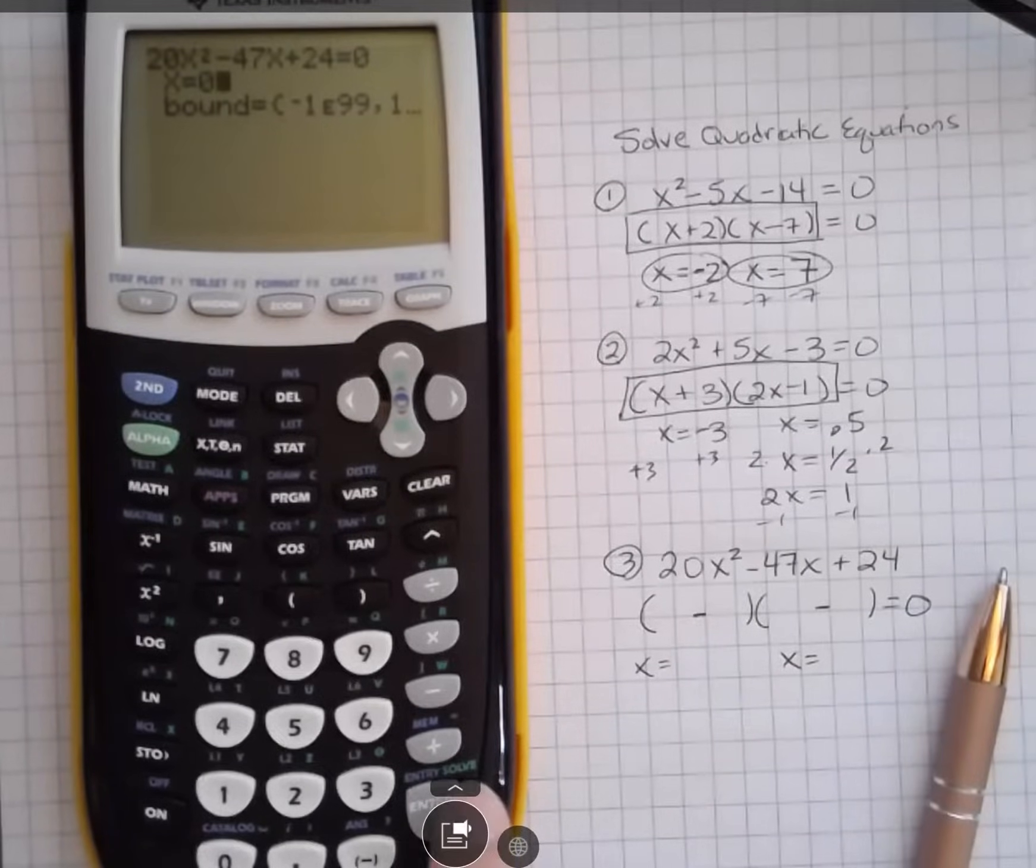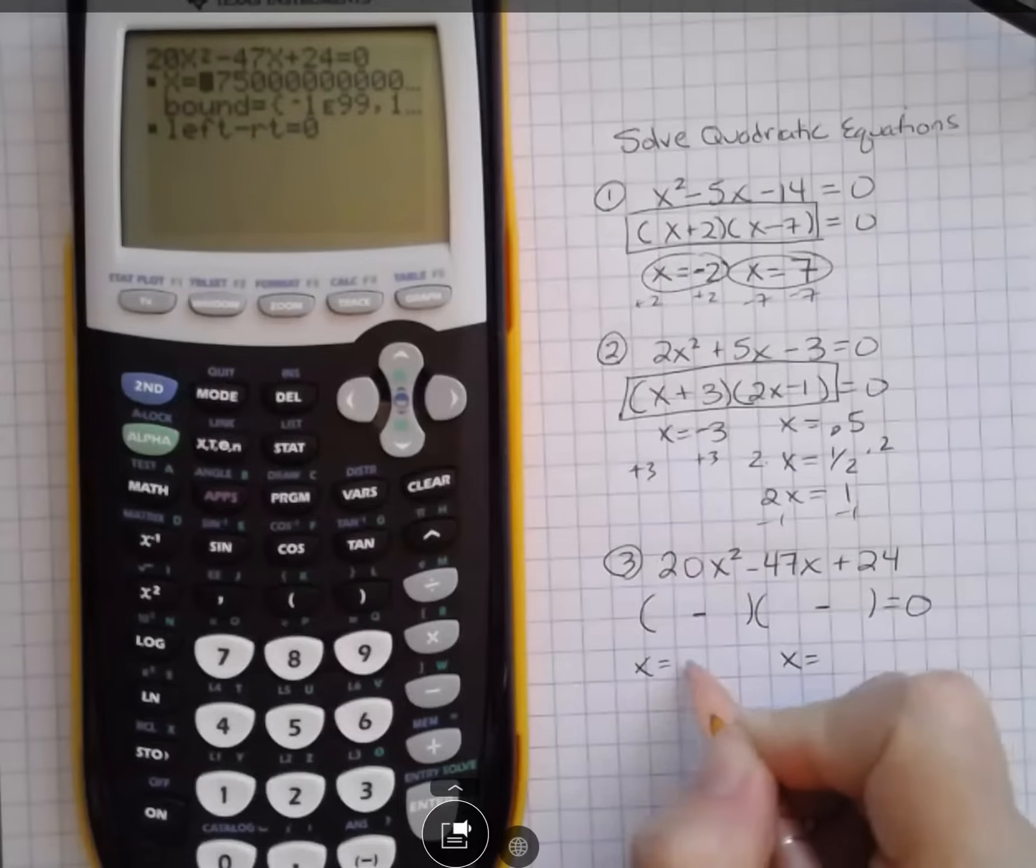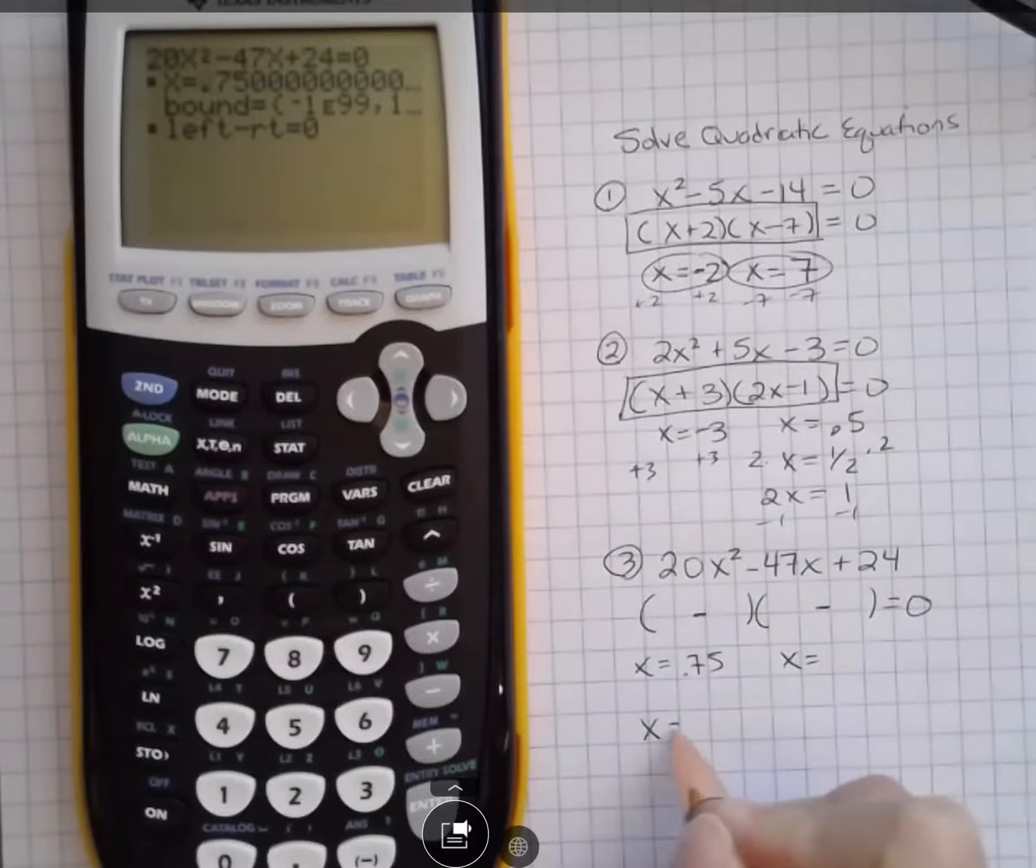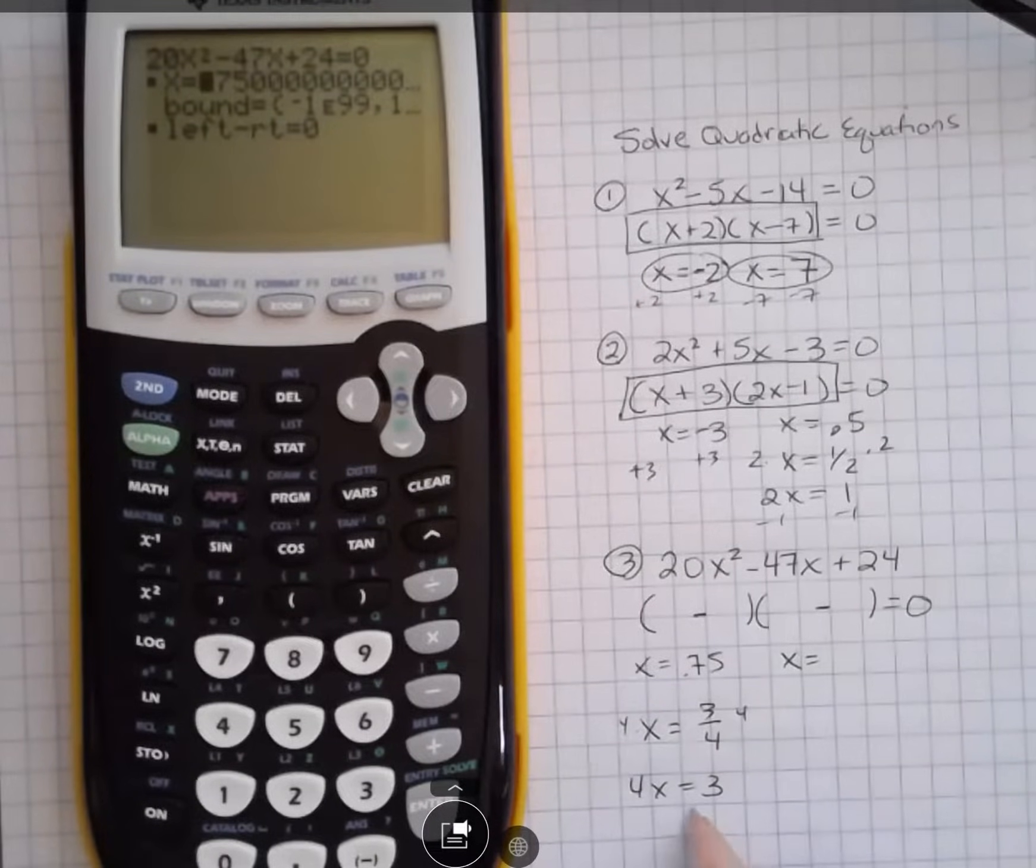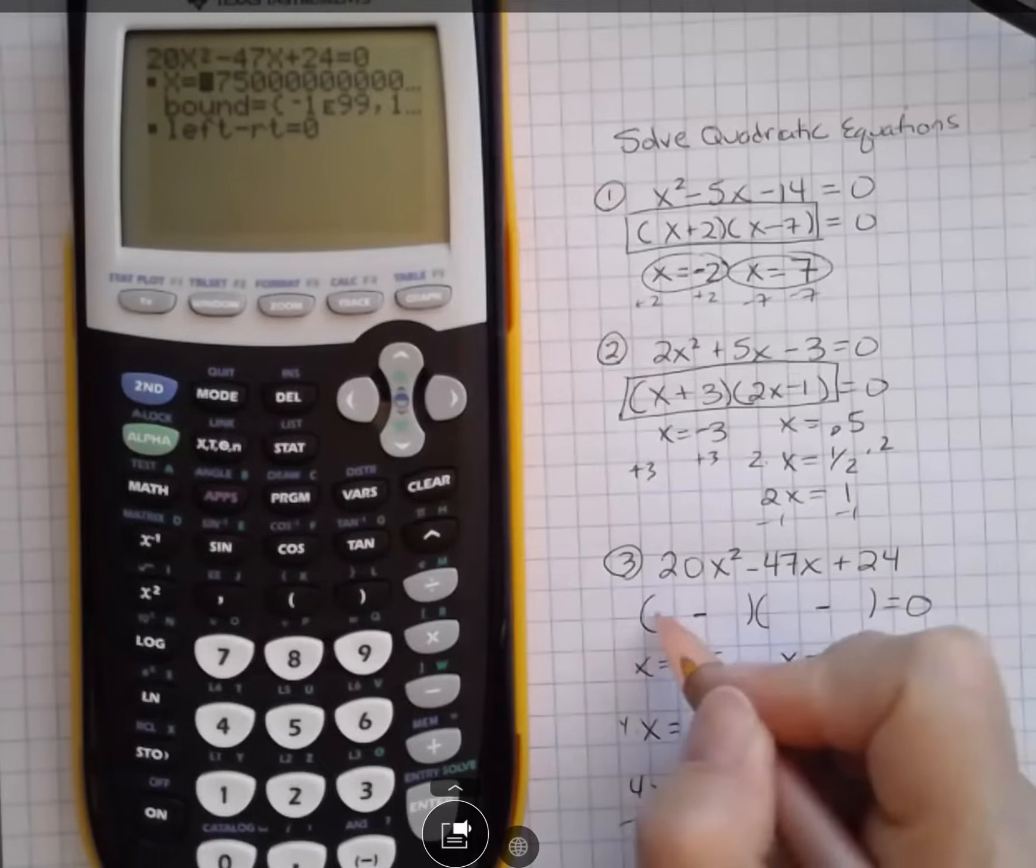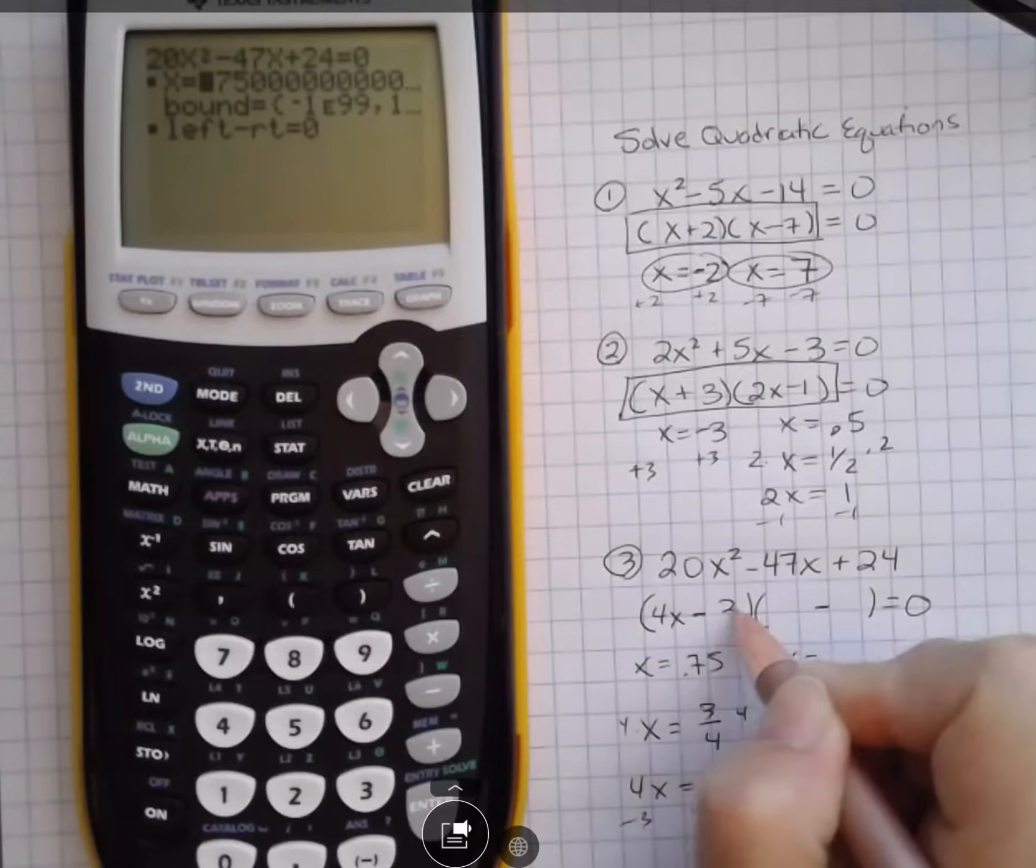I'm going to guess zero to start, Alpha Solve, and I got 0.75, which has a bunch of zeros trailing that. But what does 0.75 look like as a fraction? It looks like three-fourths. If I multiply both sides by 4, I get 4x equals 3, and if I move that 3 to the other side, I get 4x minus 3. So that's my first factor.